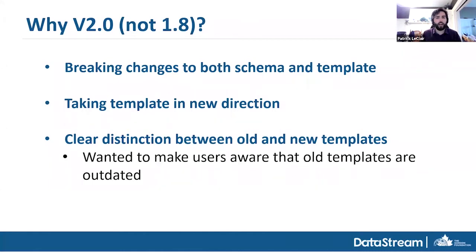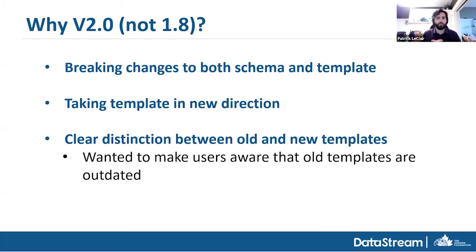So why version 2.0? One of the big reasons for a major version change — changing that first number — is because we had major breaking changes to both the schema and the template. We also took the template in a totally new direction. If you use the old template, it won't upload and you'll get errors. On DataStream, the first number is a major version and the second is minor — minor changes are small modifications or bug fixes, while major versions are a total overhaul.